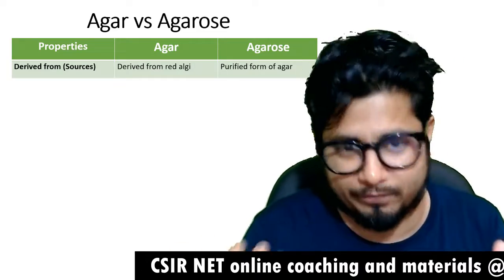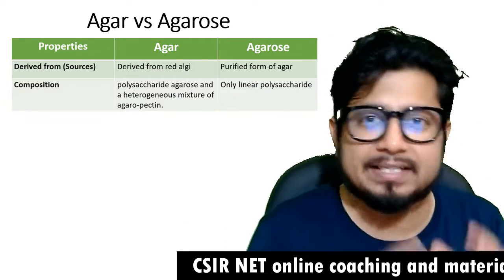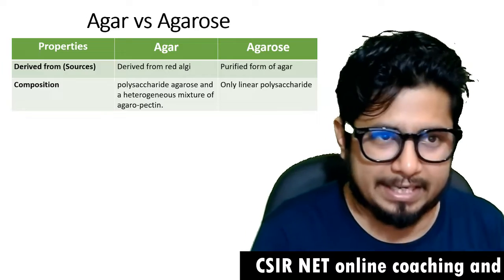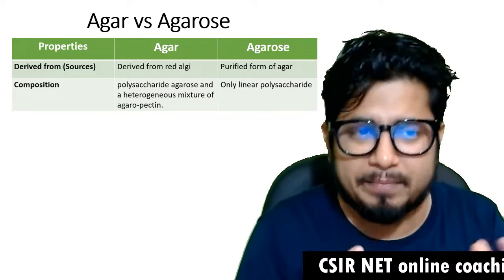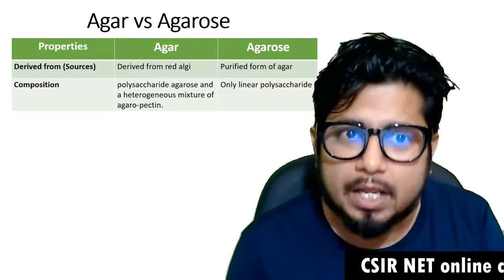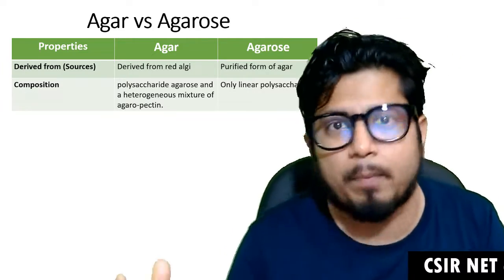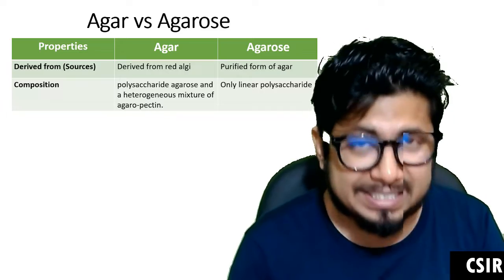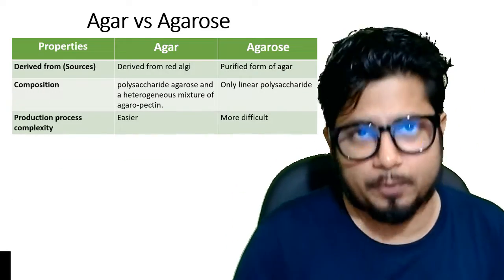The second parameter is the composition. Agar is composed of the polysaccharide agarose and a mixture of agaropectin. Agarose, however, is only composed of a linear polysaccharide — there is no agaropectin in agarose.